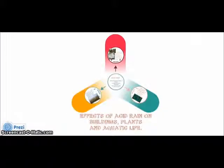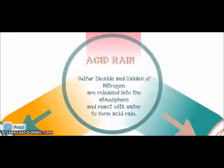Effects of acid rain on buildings, plants and aquatic life. Sulfur dioxide and oxides of nitrogen are released into the atmosphere and react with water to form acid rain.